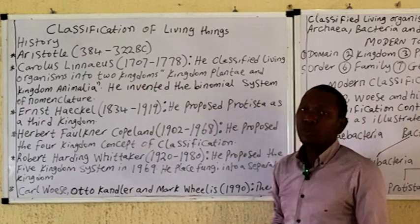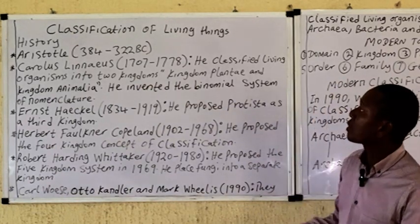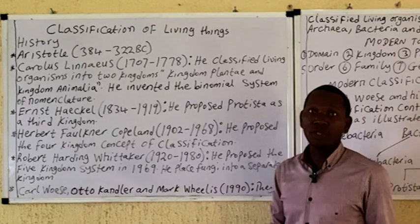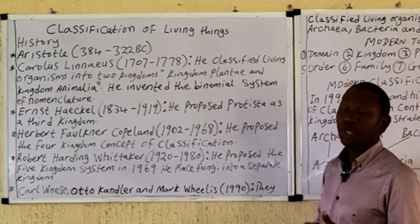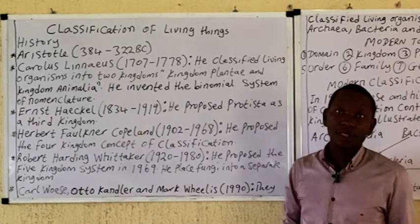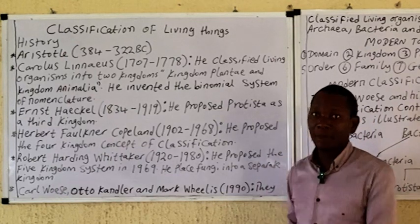Aristotle was the first to make an attempt to classify living organisms, in which all living organisms were grouped into two categories: the plants and the animals.